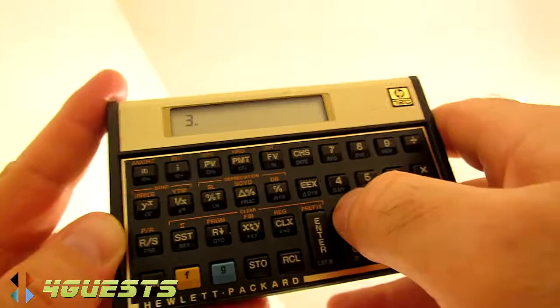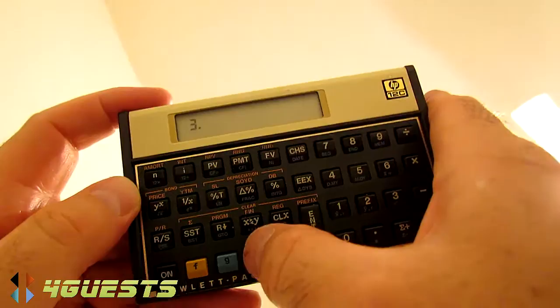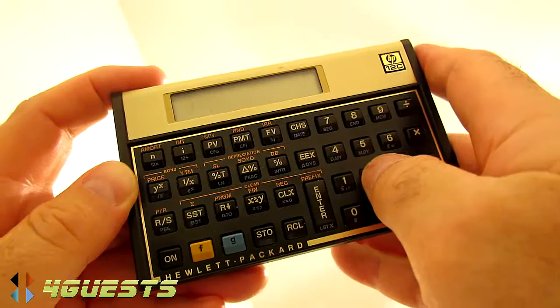So the way to change that, after we clear this out, is we'll go F two to get two places past the decimal point.